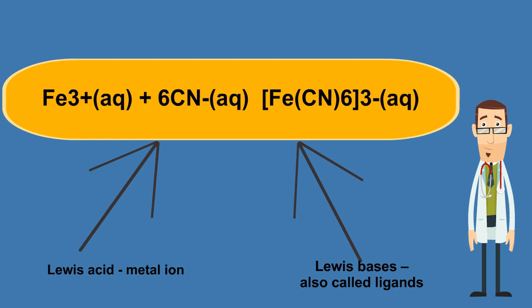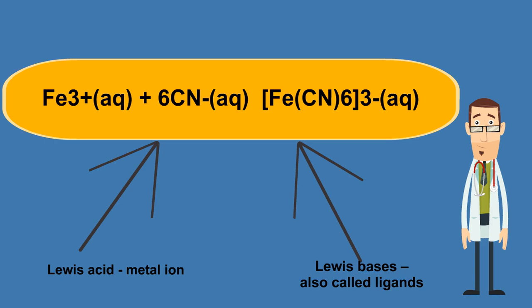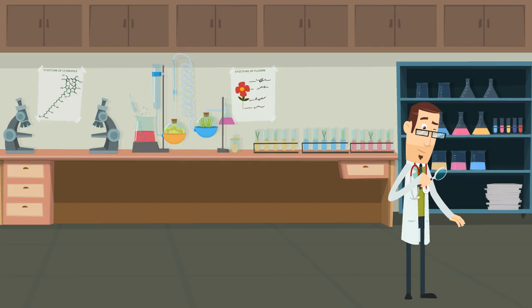For example, a Lewis acid, which is a metal iron, Fe3+, combines with a Lewis base, also called a ligand, CN-, to form a coordination complex.